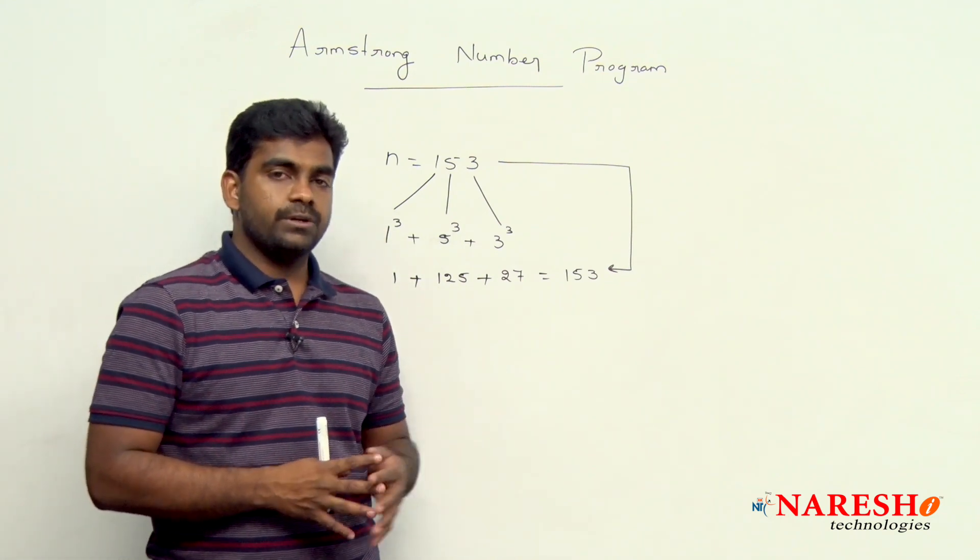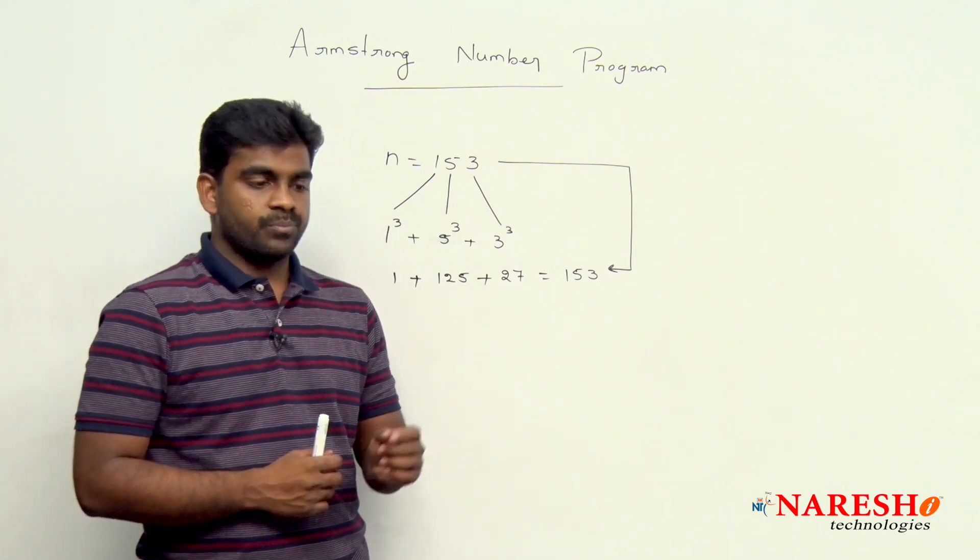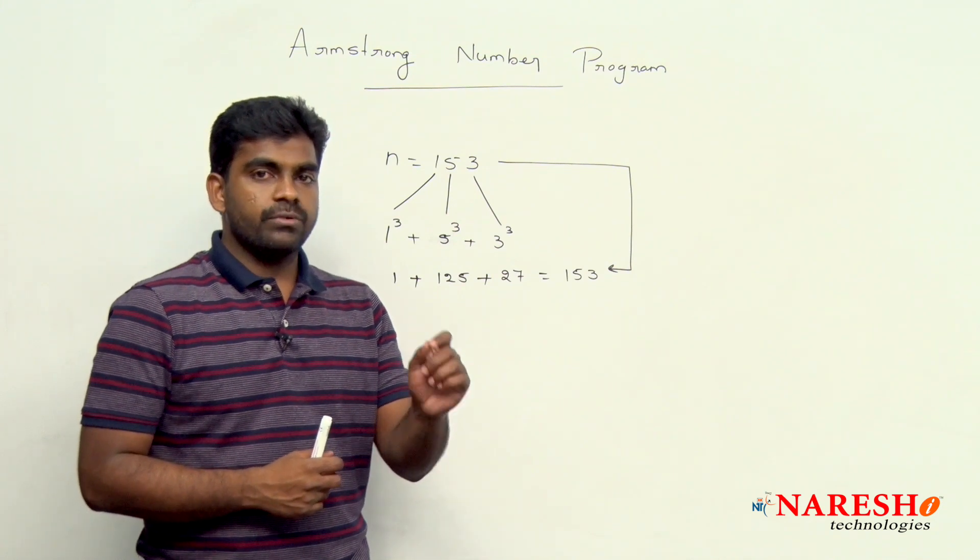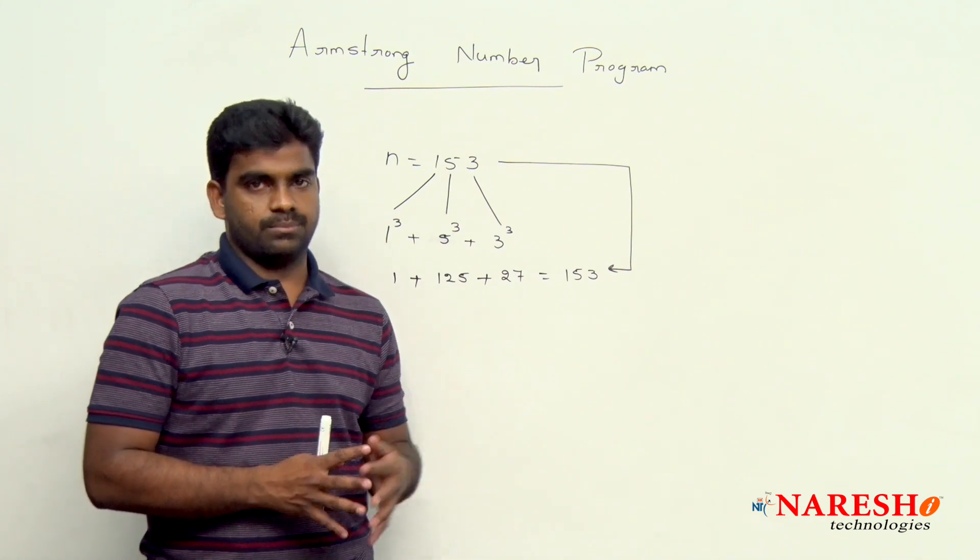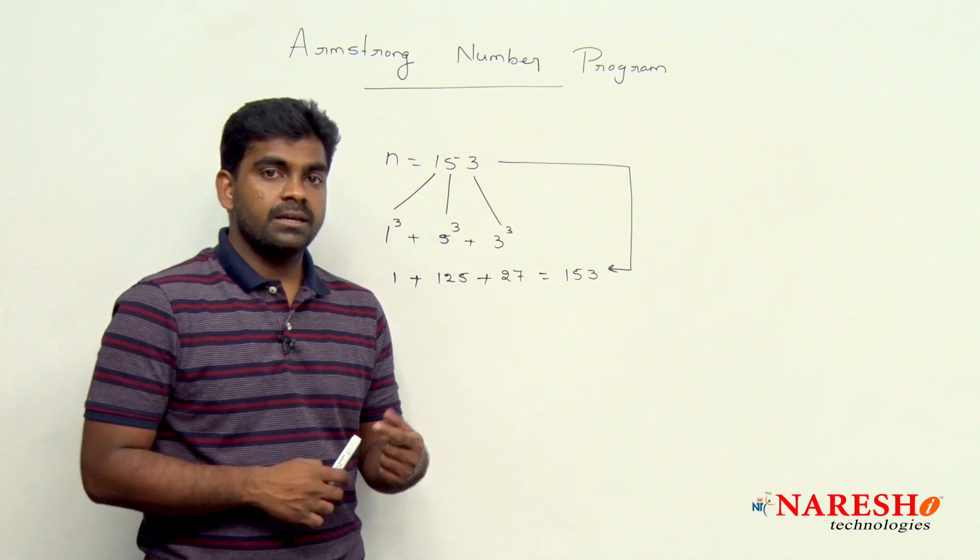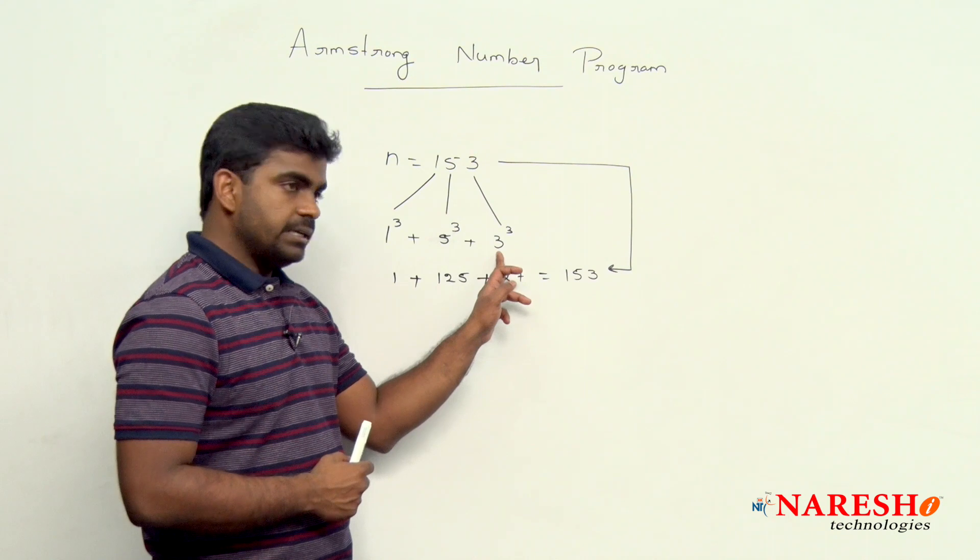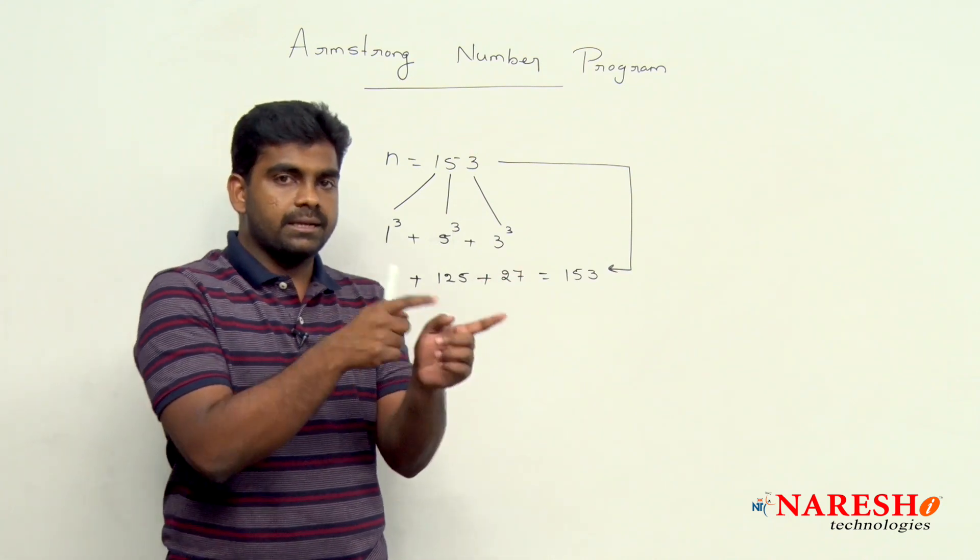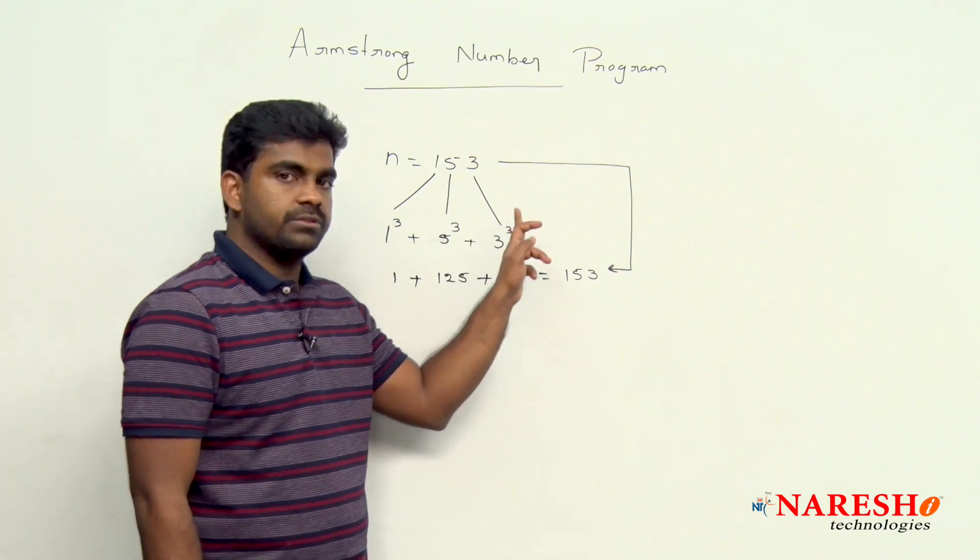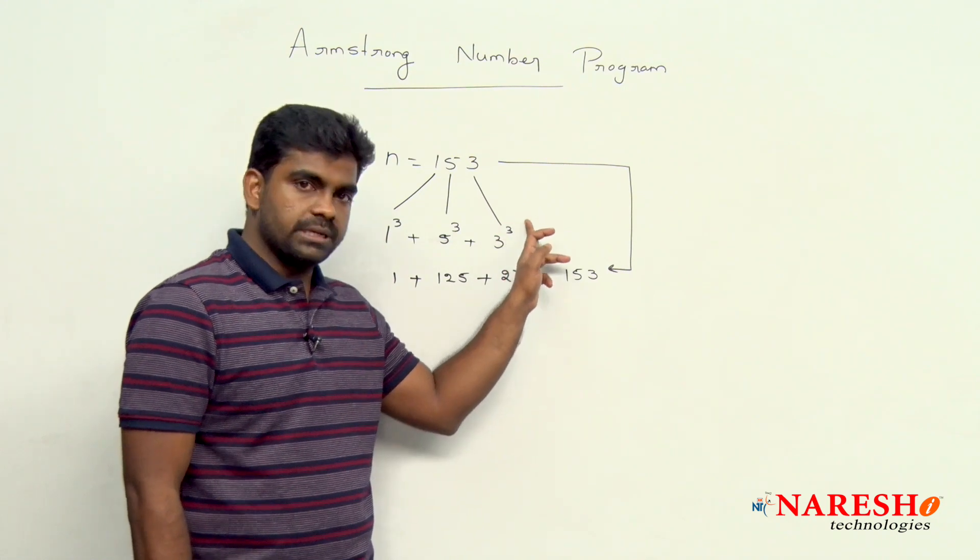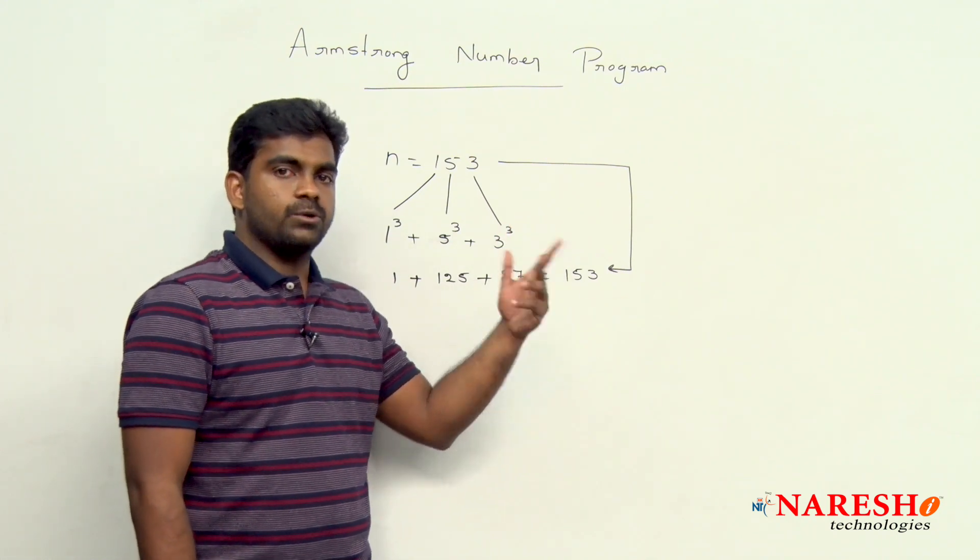In the last video, I clearly mentioned how to find the sum of digits in the given number. Now, in this example, after finding the digit instead of adding directly, just make it power 3, cube operation, and then add to the sum.